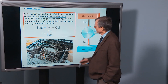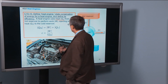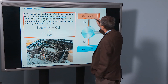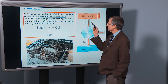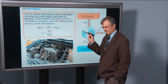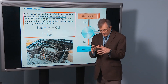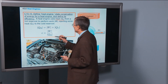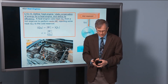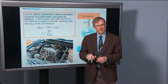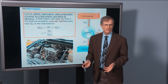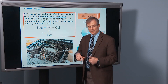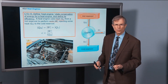A heat engine uses heat, which we call QH, from a hot reservoir. Think about that reservoir being the hot air inside the cylinder. We want to use that hot air to perform work. What the hot air in the cylinder does is push the piston around and cause the crankshaft to turn, which turns your wheels. So we're taking heat and trying to get work out of the deal — in the case of a car engine, it's mechanical work that we need.